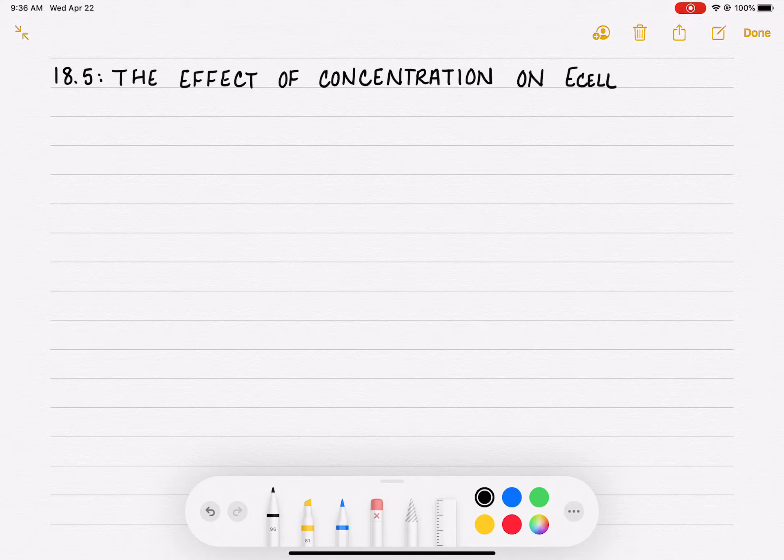Our next topic in chapter 18 is how the concentration of solutions that we use in a galvanic cell can affect the voltage of the cell.